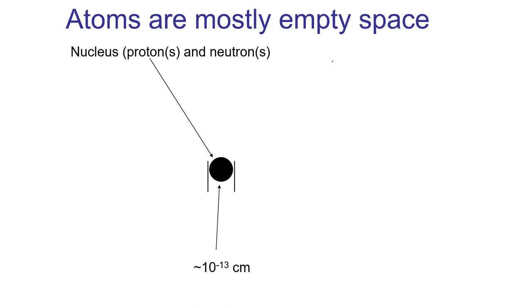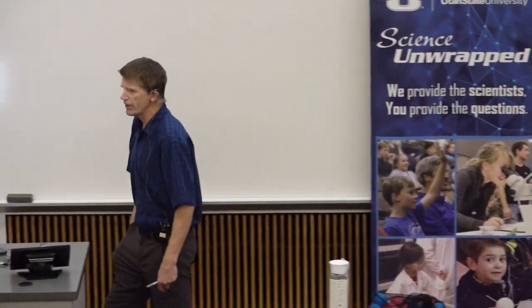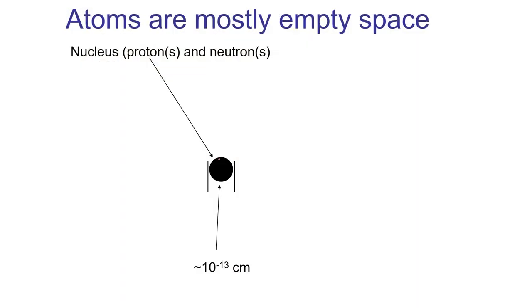So I'm composed of many, many atoms of carbon, hydrogen, nitrogen, oxygen, phosphorus, sulfur, other things. At the center of each of these atoms is a nucleus. And within that nucleus are found protons and neutrons.